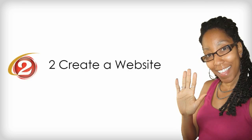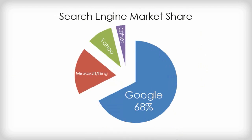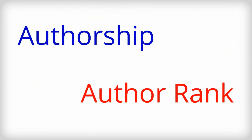Hey everyone, it's Lisa from 2createawebsite.com. Look, say what you want to say about Google and their monopoly — and I know that I've been publicly critical about many of their recent moves, see my last video — but there are two inventions that I absolutely love and they are called authorship and author rank.